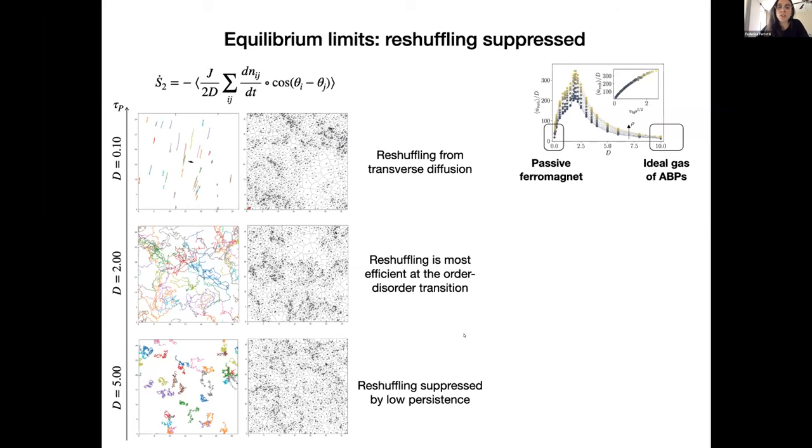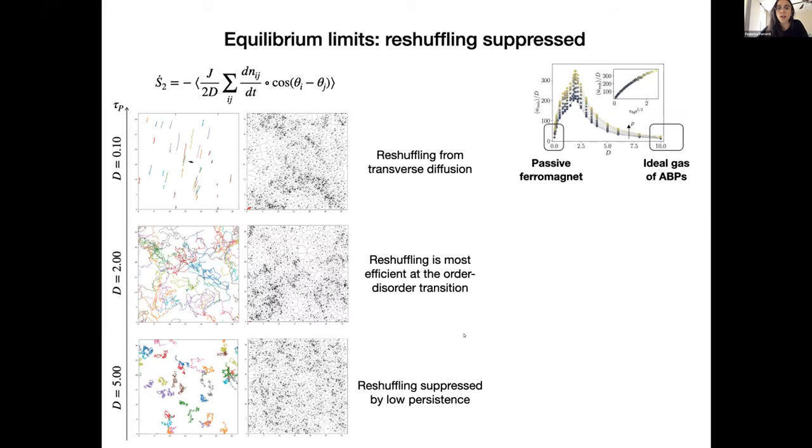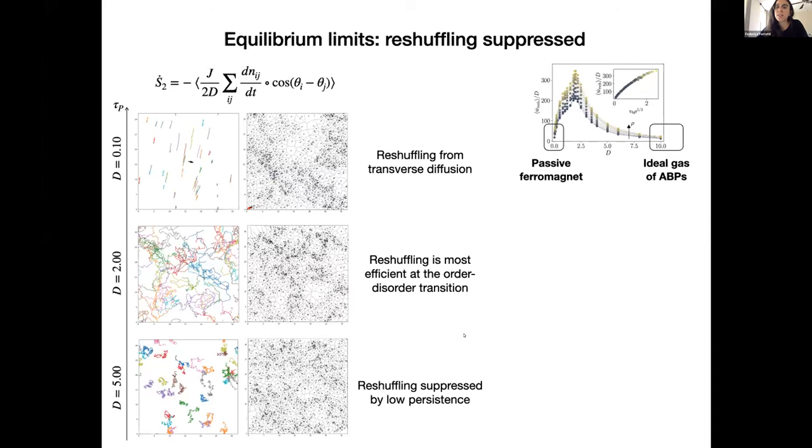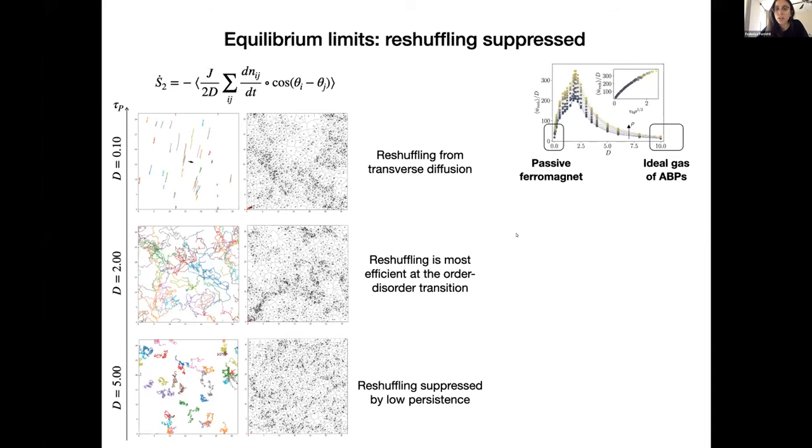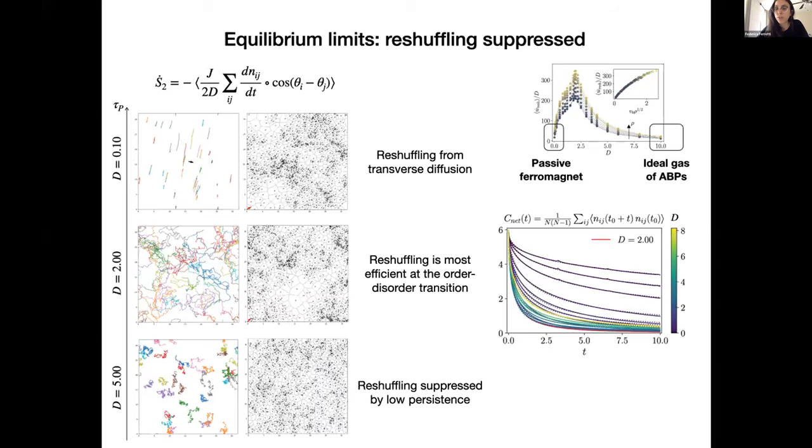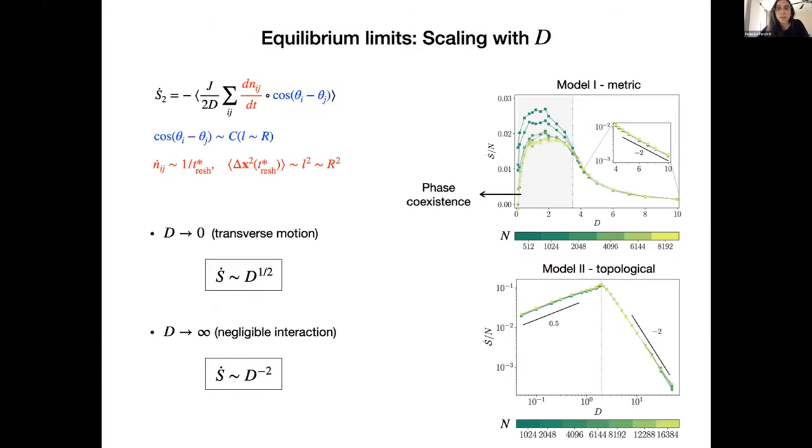And this can also be observed by looking at the autocorrelation function of the interaction network. Another thing that we could observe close to, I mean, in equilibrium, the two equilibrium limits was the scaling with D, the rotational diffusion coefficient.